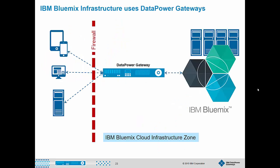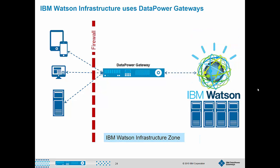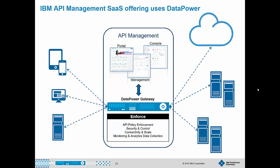On the next few slides, I'm going to show you how IBM is using both physical and virtual DataPower deployments to secure cloud infrastructure. Bluemix is IBM's premier cloud platform as a service, and the Bluemix infrastructure uses DataPower Gateways for edge security and request routing, among other things. IBM's Watson technology is revolutionary, and IBM Watson also uses DataPower Gateways as part of their infrastructure. Finally, IBM's API Management software-as-a-service offering leverages DataPower Gateways to process and route API traffic, collect usage analytics, and enforce rate quotas.